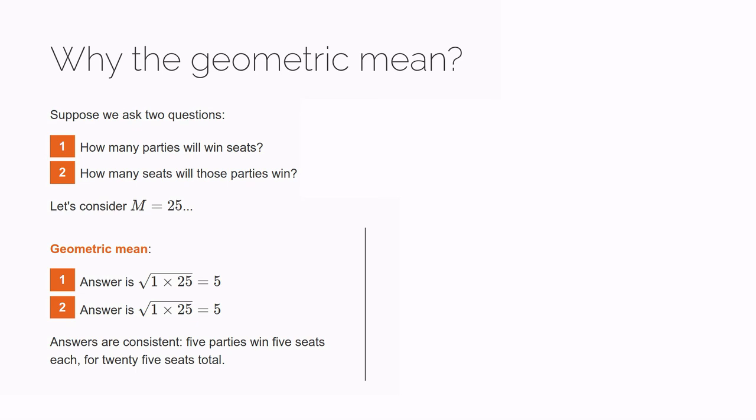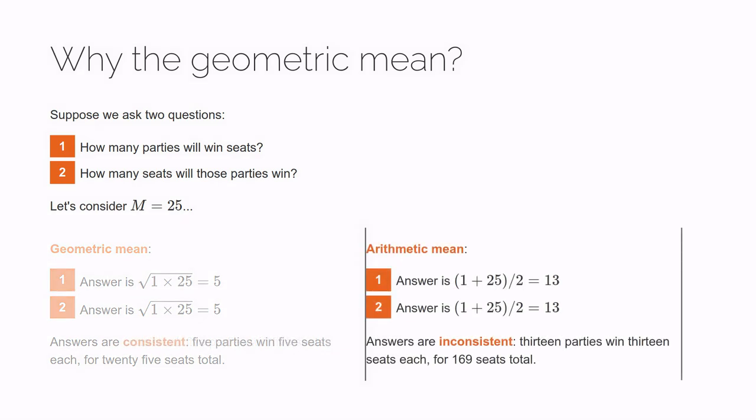If instead we use the arithmetic mean, then our guesses end up inconsistent. We guessed 13 seat winning parties, each winning 13 seats, but that's impossible because 13 times 13 is 169, far more than the number of seats available.